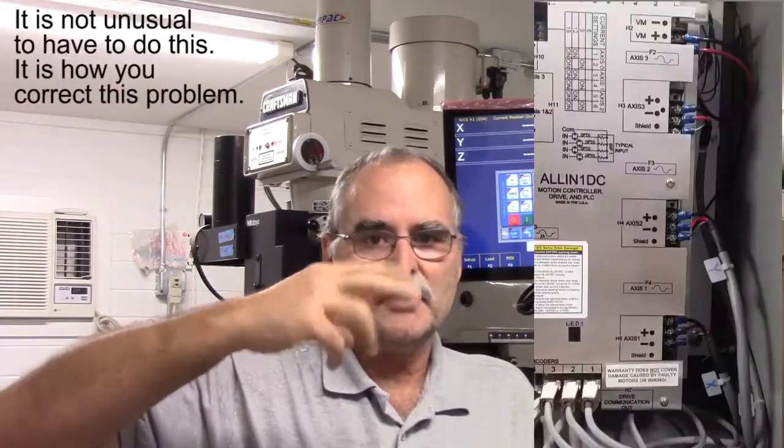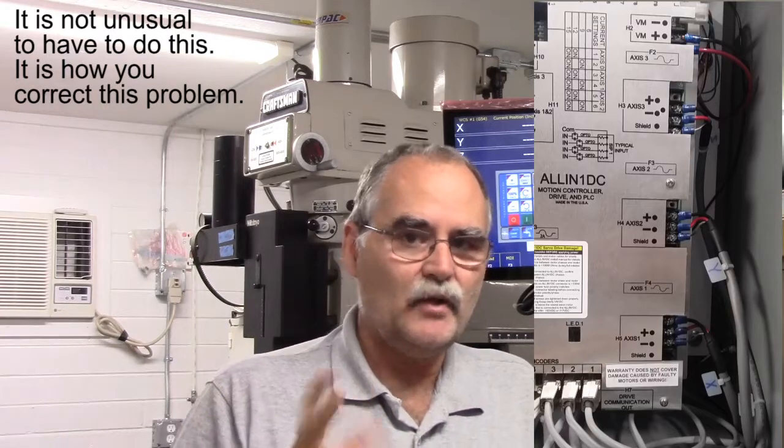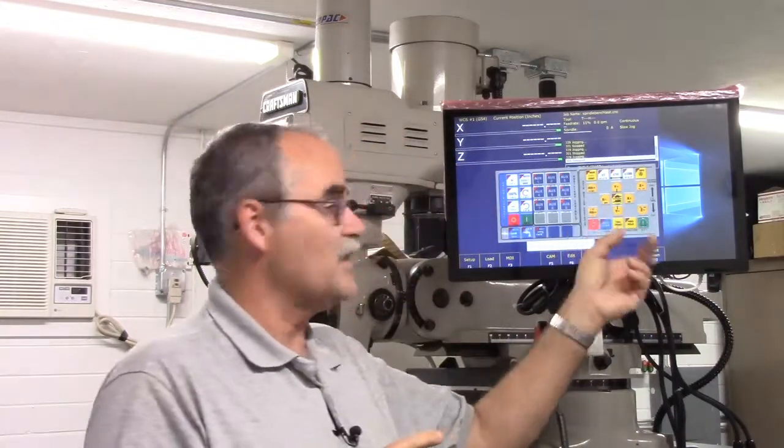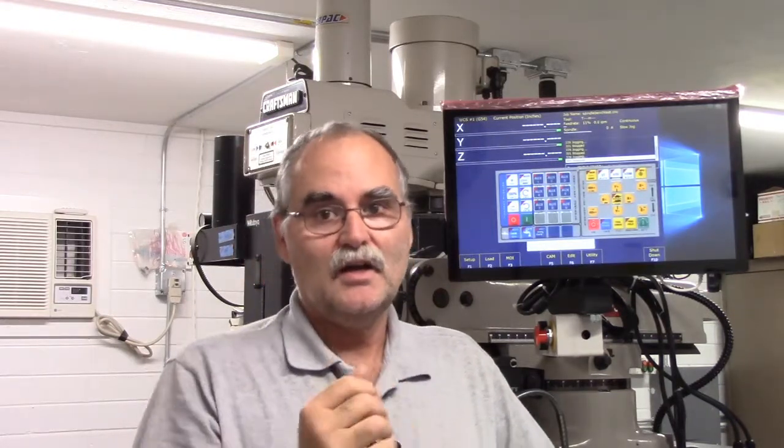So I went in there and I just reversed—I took the red lead and put it on the negative and put the black lead on the positive. Then I started up the control, and I only did it on the y-axis because it was easy for me to watch. Then I went into the jog panel and jogged that y-axis back and forth. Lo and behold, it would go one direction and it would go the other direction. So I said 'Aha, that's what it was.'